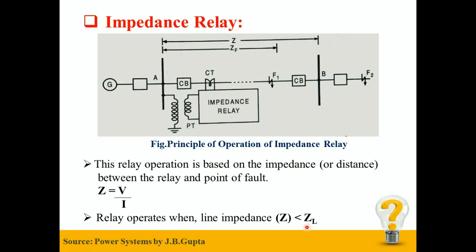Under normal working condition, the impedance of the line is ZL. The impedance relay is so designed that it operates only when line impedance becomes less than ZL. When fault occurs between point A and point B, the impedance of line becomes less than ZL. As you can see in the equation, due to the abnormal condition I increases, therefore Z decreases.